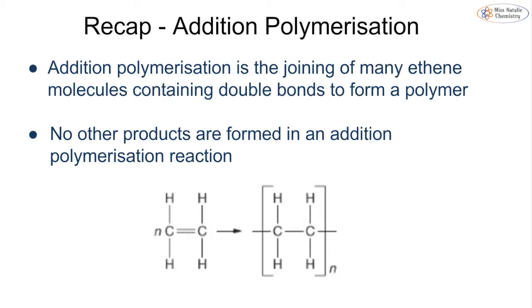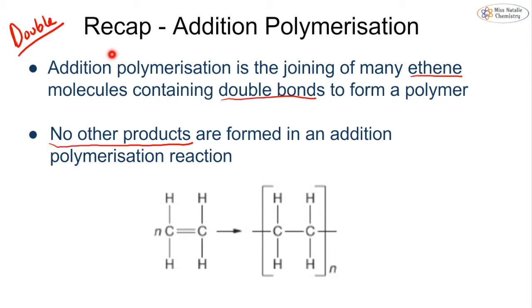Just a recap from what you learned in double: addition polymerization is when we have lots of ethene monomers containing double bonds that join together to form a polymer, with no other products being formed. We have n number of ethene monomers joining together to make a polymer with n repeat units — that's addition polymerization.